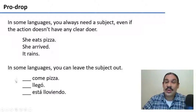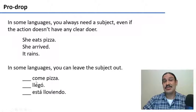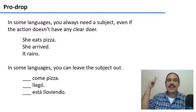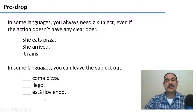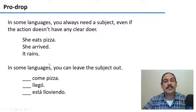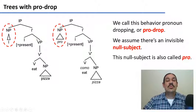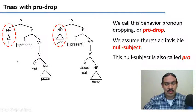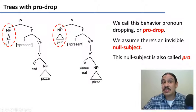On the other hand, there are languages where you can leave the subject out under some circumstances. For example, in Spanish, if you already know who you're talking about, you could just say 'come pizza' - eats pizza - and then you know that it's he or your friend or whoever. You can say 'llegó' - the person arrived - and you can just say 'está lloviendo' - raining - which in English would need the 'it is raining' word. So in some languages, the subject can drop. We're going to call these languages, like Spanish, pro-drop languages.